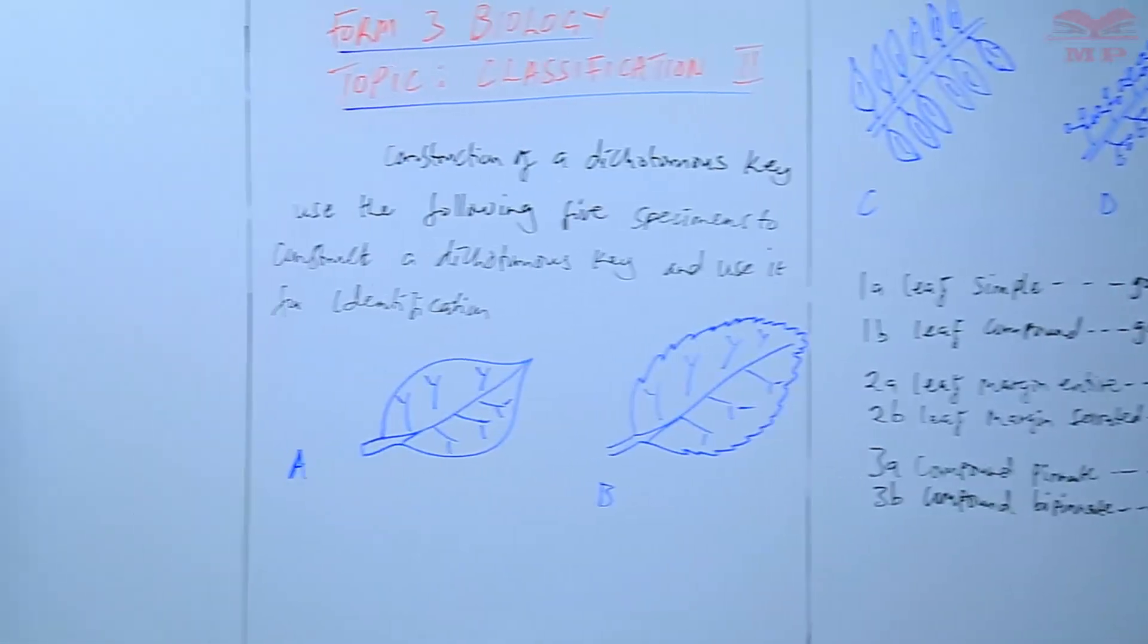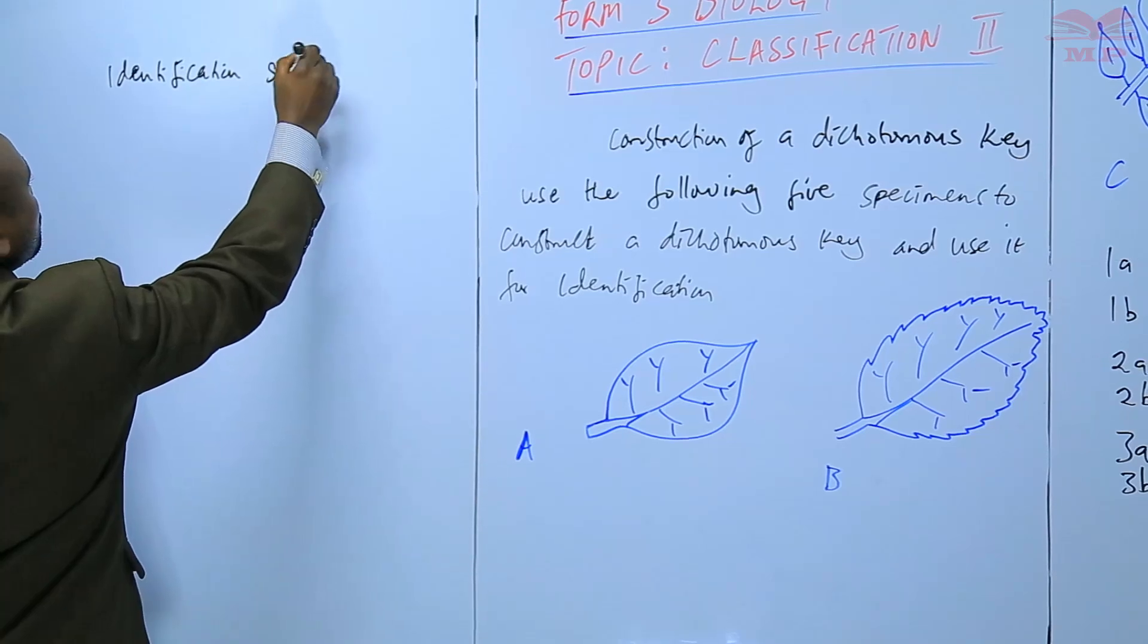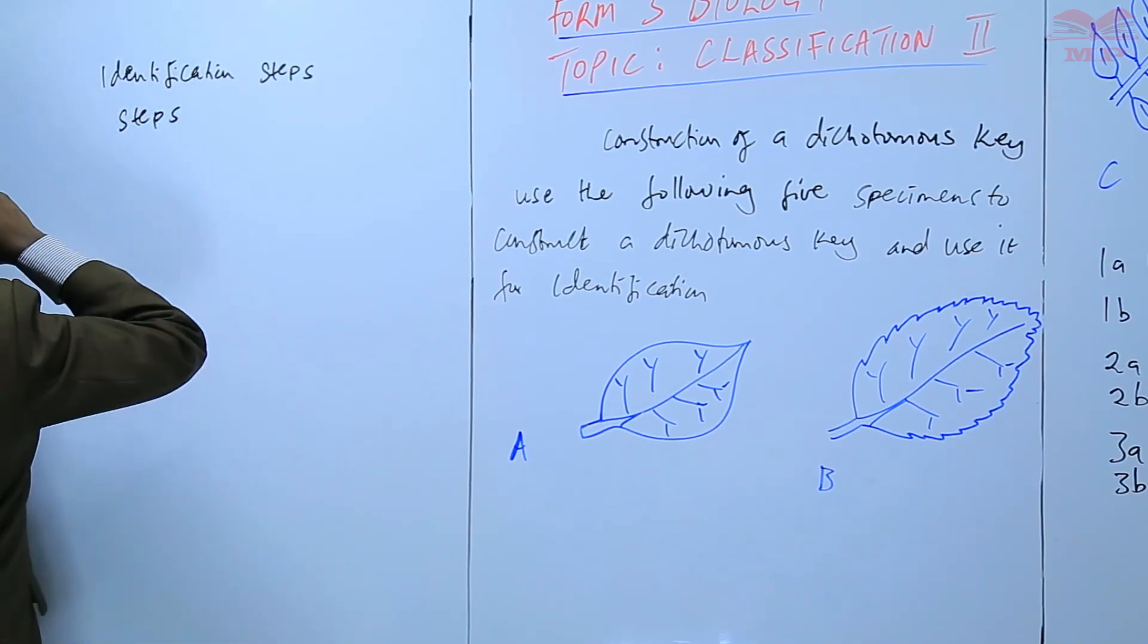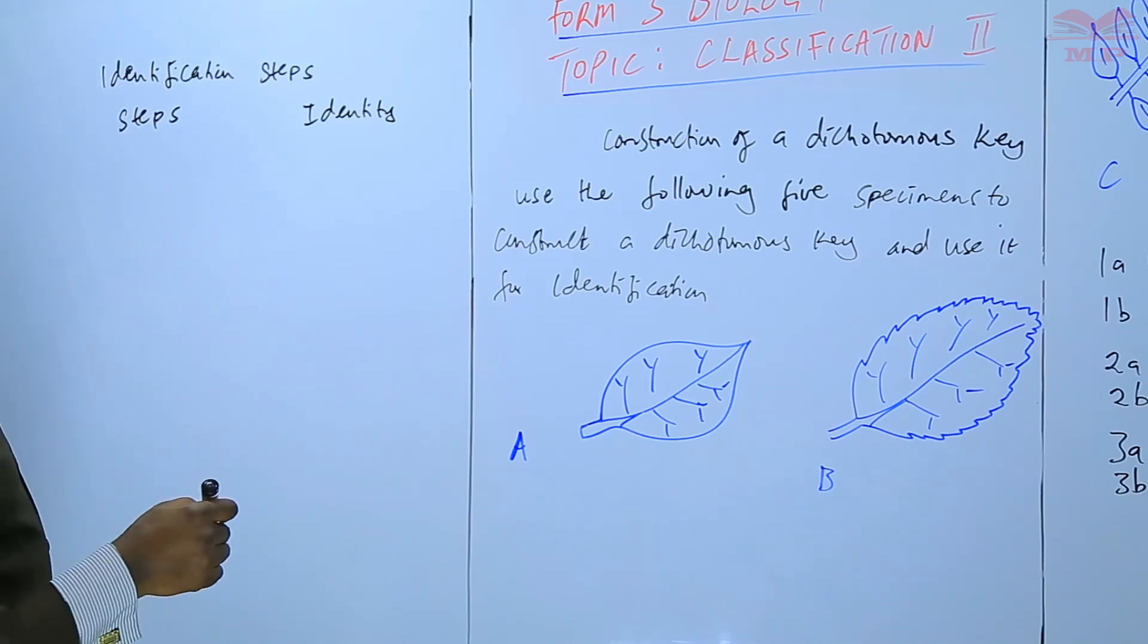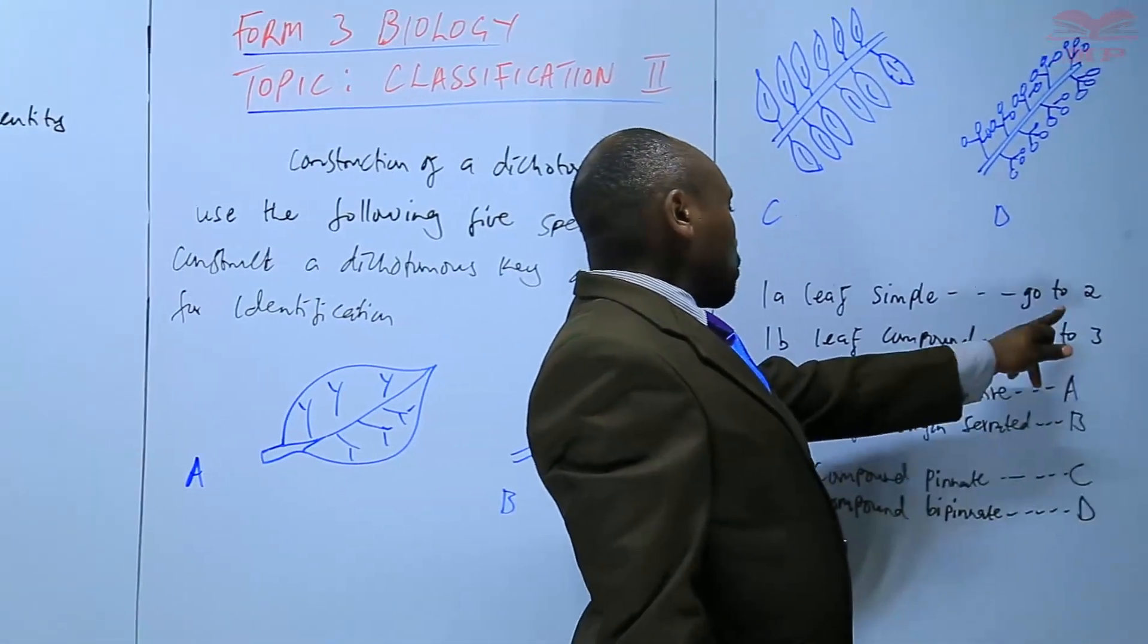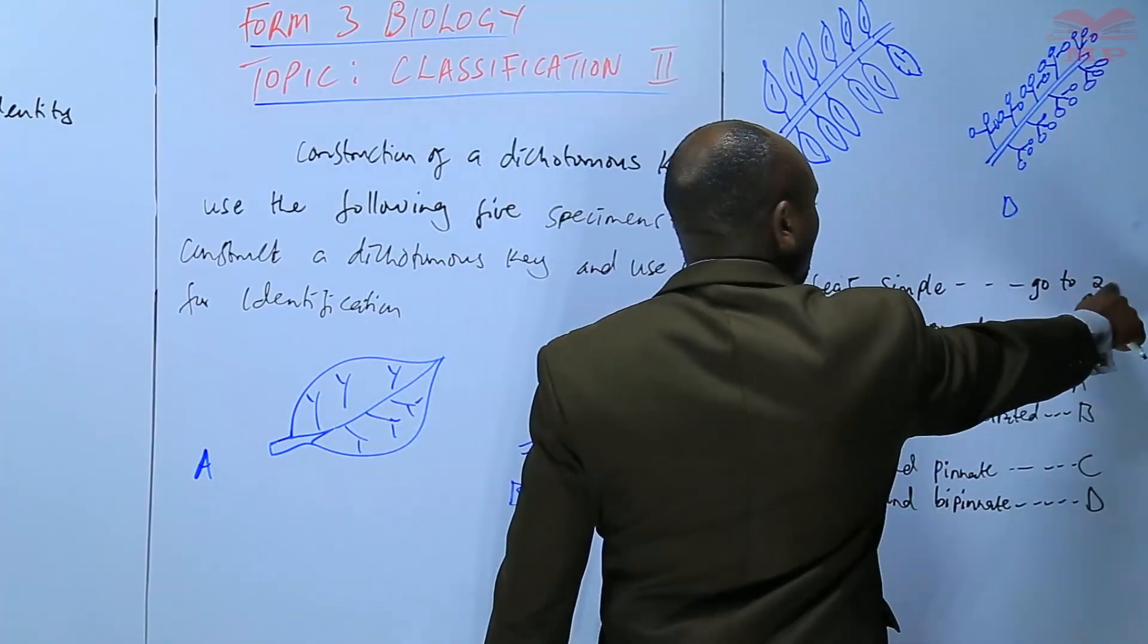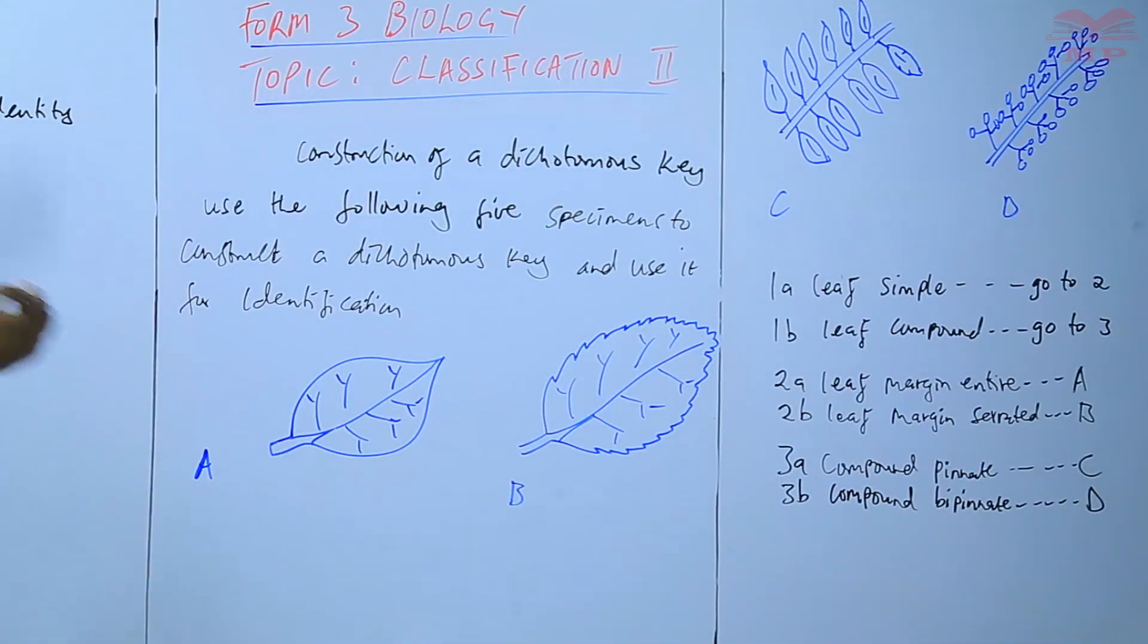The identification steps, we will identify the steps here. And then the identity. To identify A, what we did, we said 1A, go to 2, then to 2 we went to 2A, we came up to A. We say step 1A, step 2A leads us to A. It's like a path, 1A, go to 2. When it comes to 2A, it tells us to go to A. The step is 1A, 2A, and then the identity of our specimen is A.